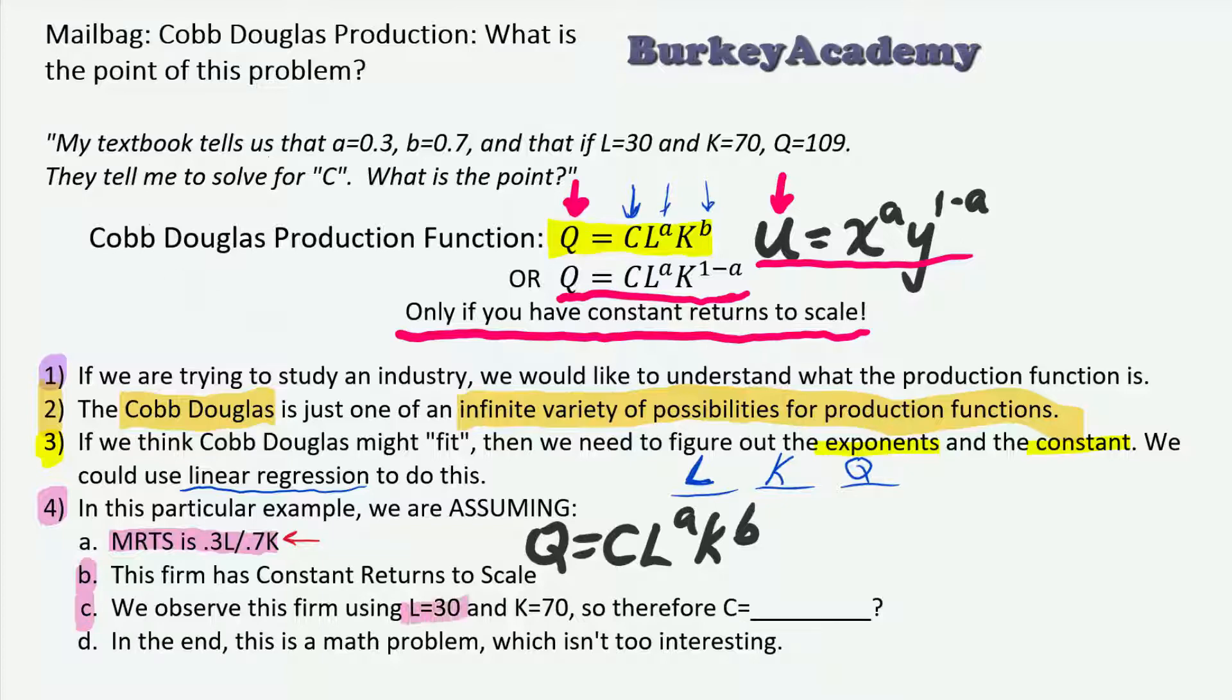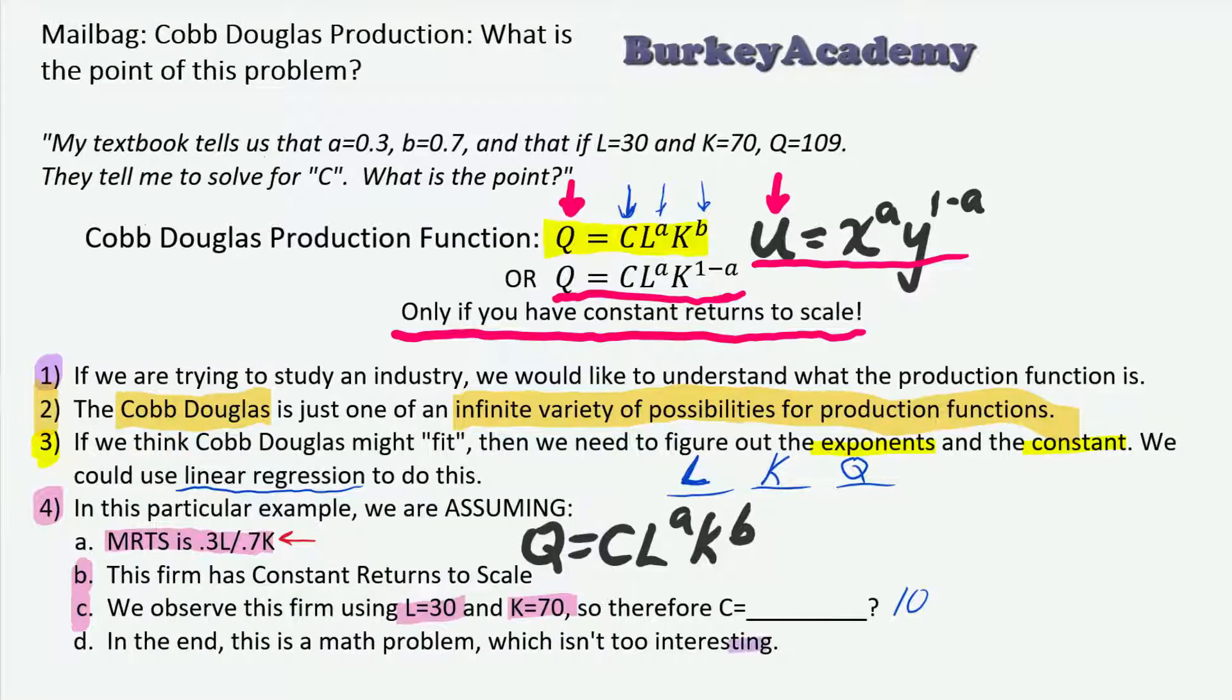And then also, we're assuming that we observe this firm plug in 30 and 70 and they get 109 units of output. Therefore, what C? So all we're doing here is just a little math problem. It's not all that interesting. I'm just telling you this is not rocket science - this is really a math problem just to see if you understand the mathematics behind this.